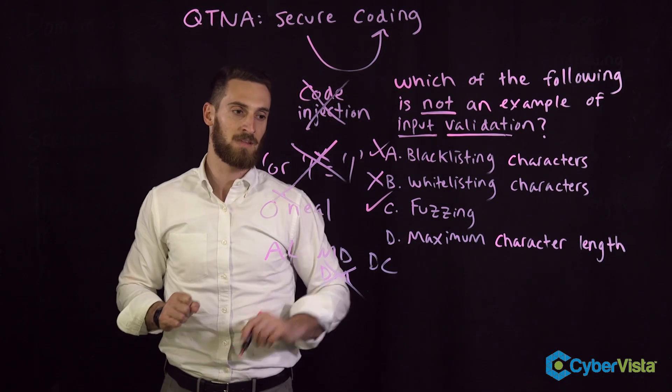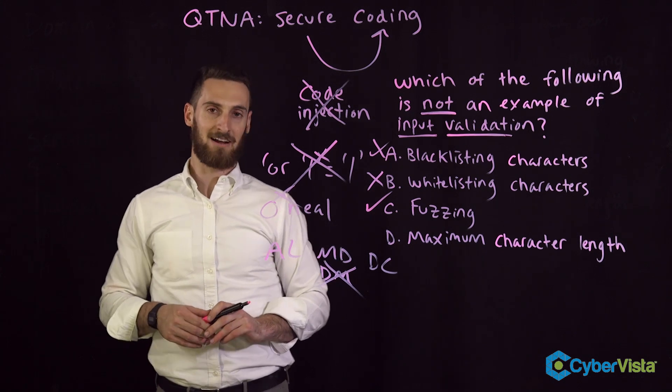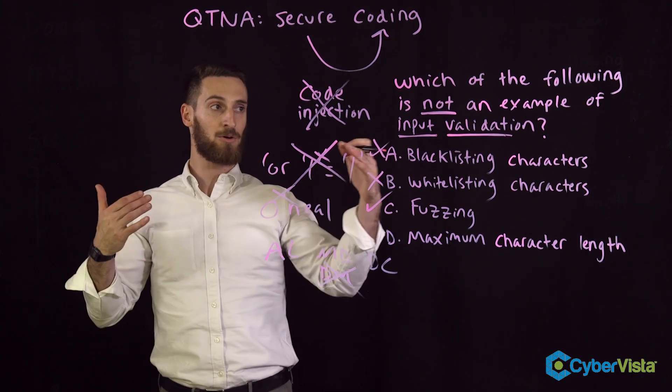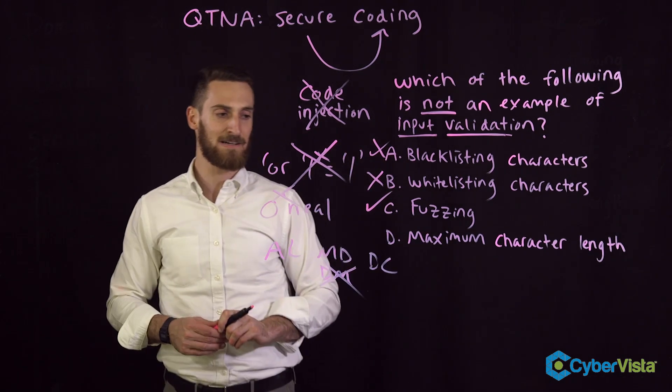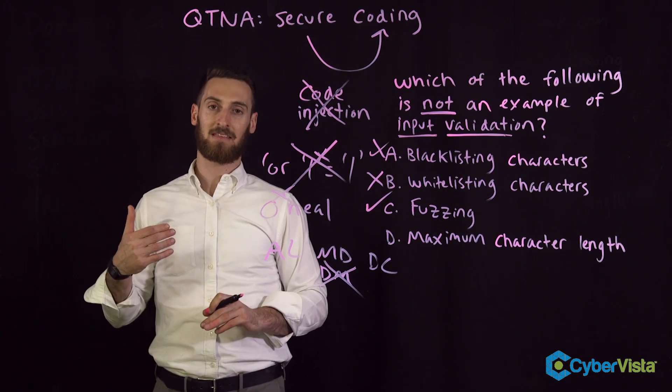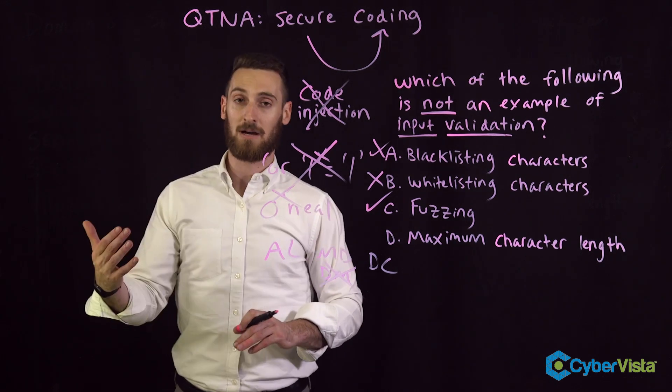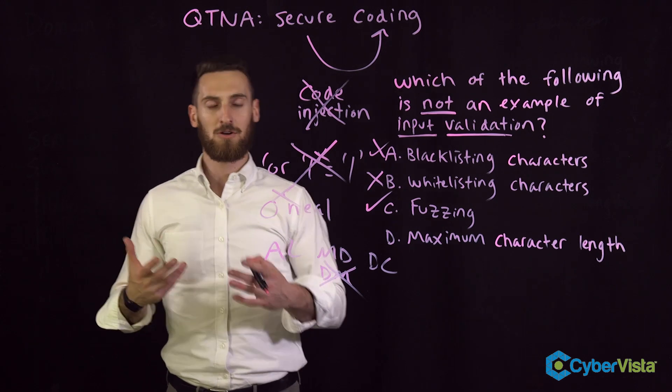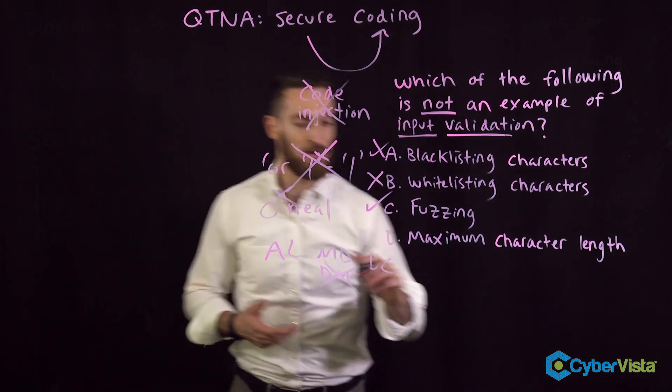How about D, maximum character length? We know just by default that this is an example of input validation. In maximum character length you're saying the input can only be, you know, 10 characters long. We do this to prevent the attack called buffer overflow.